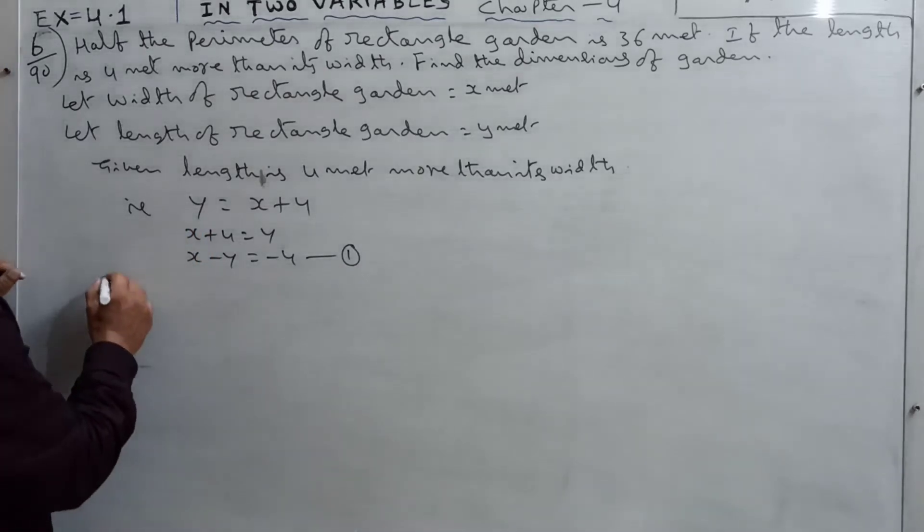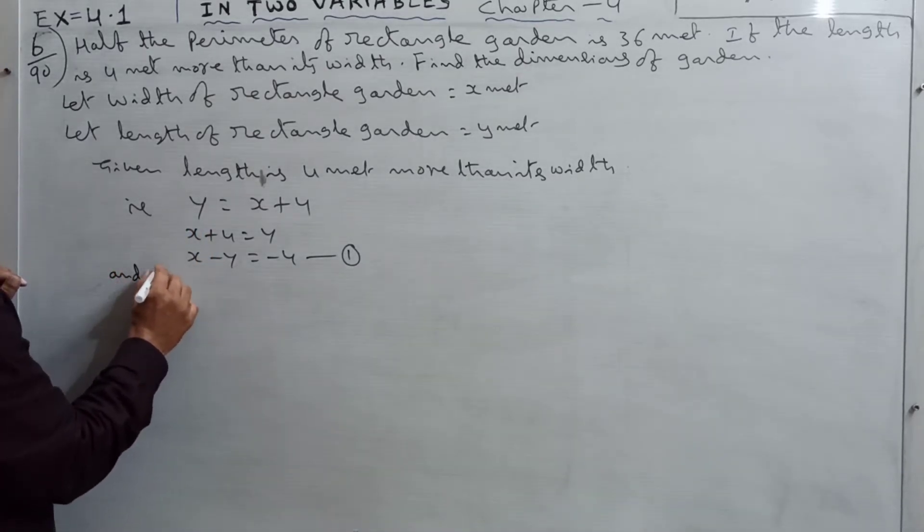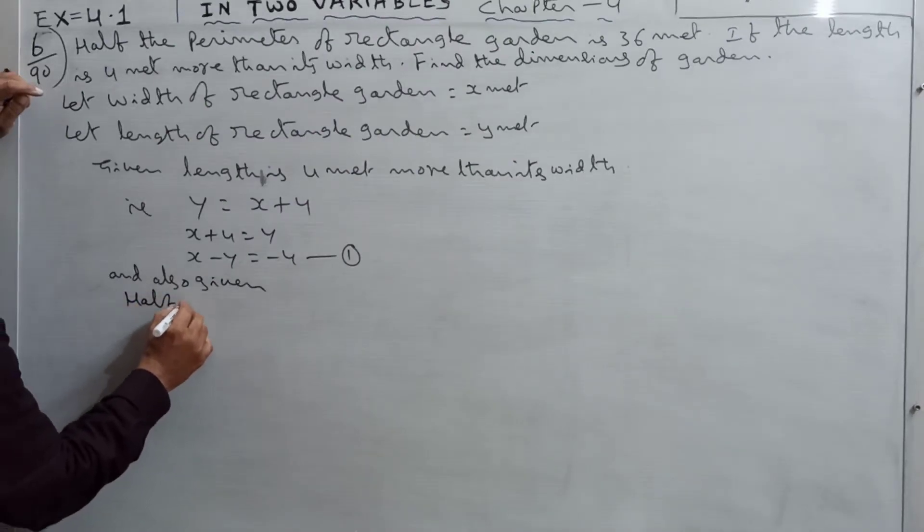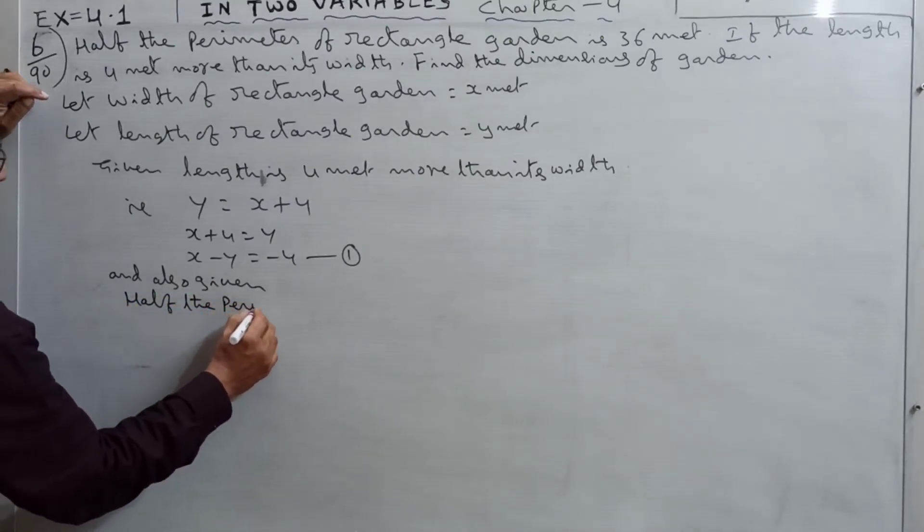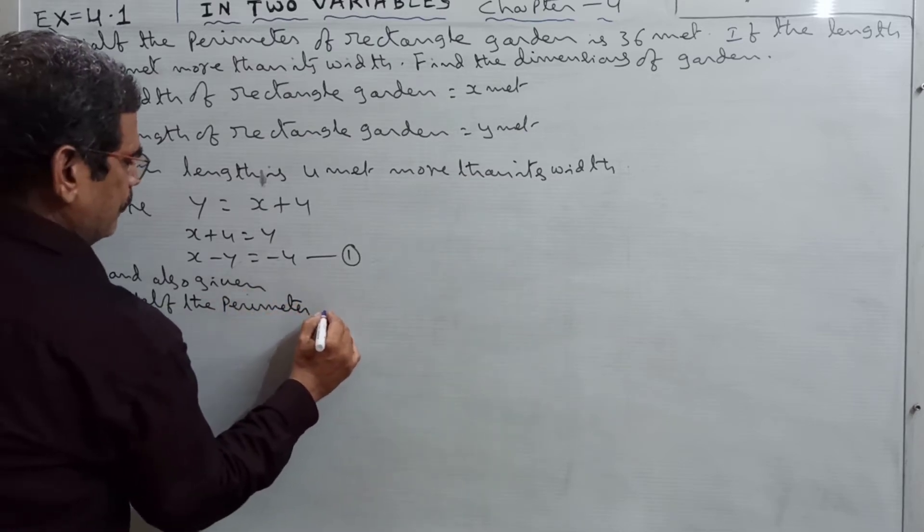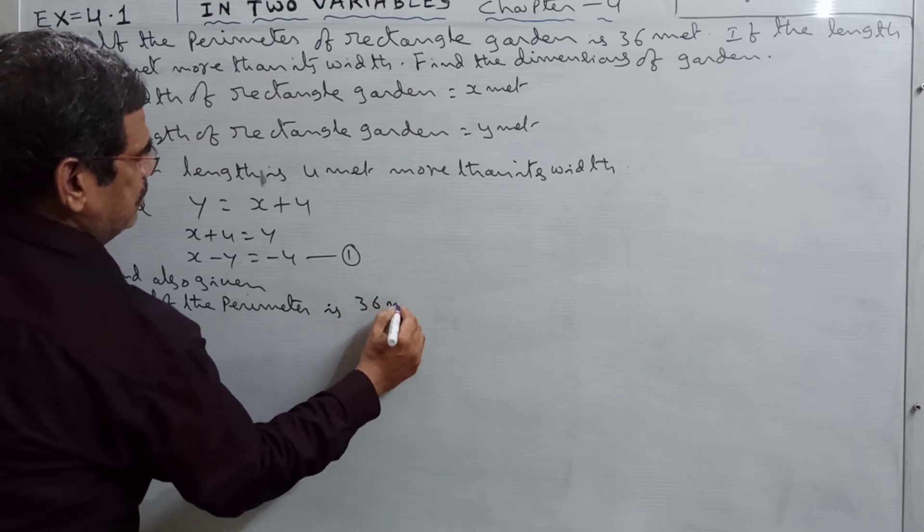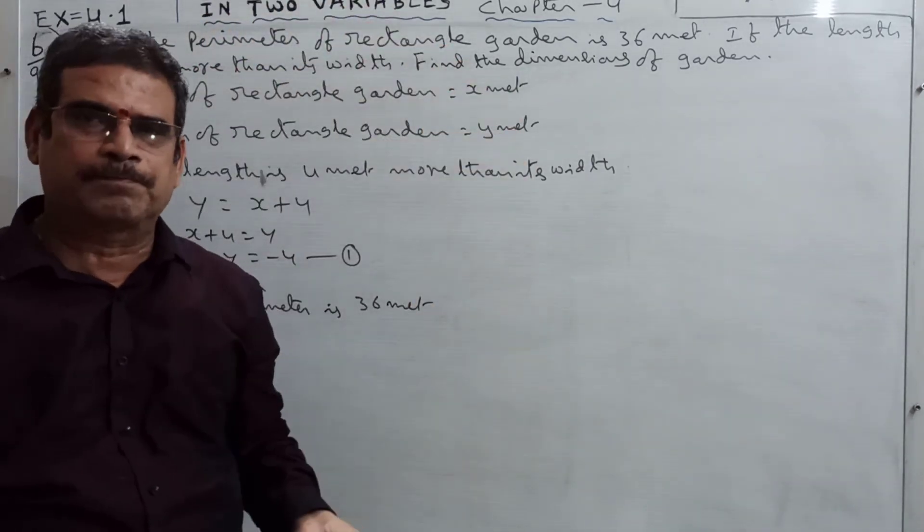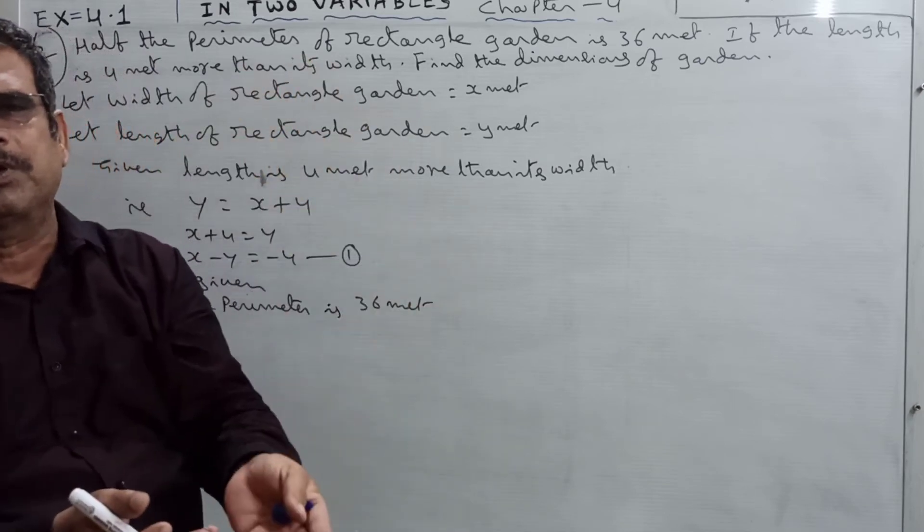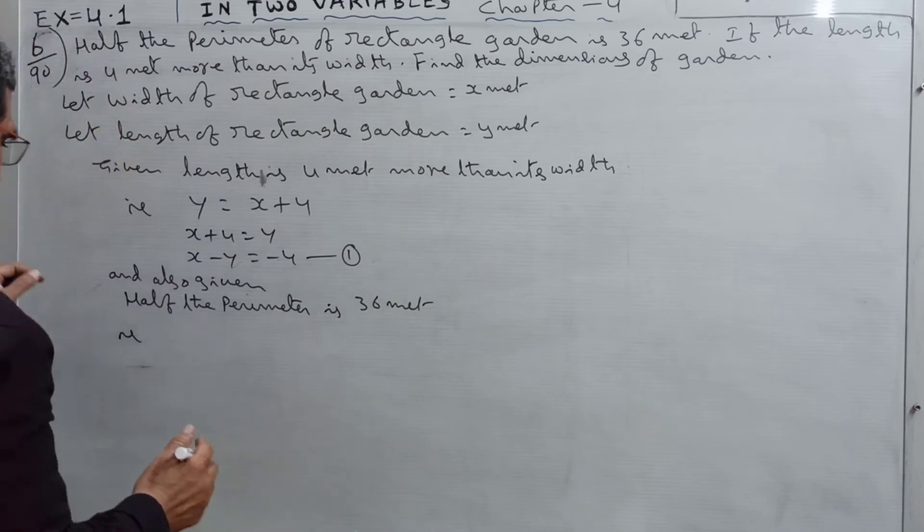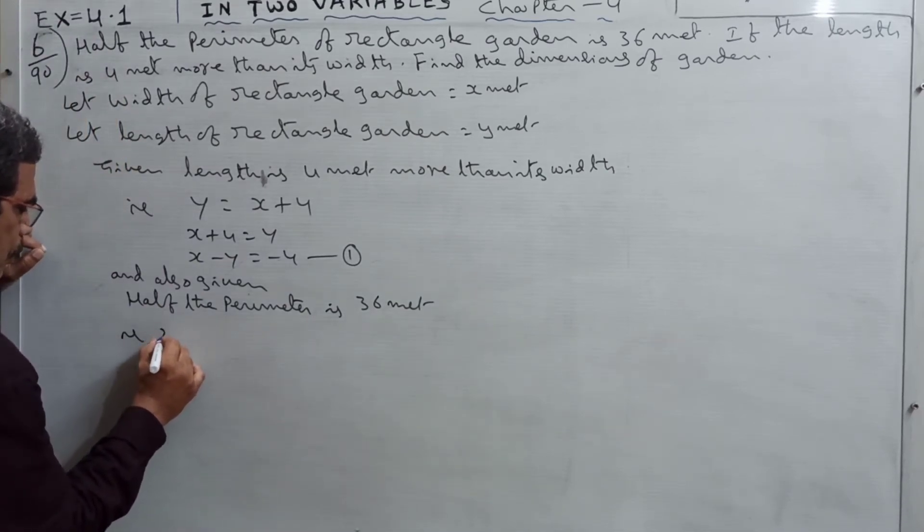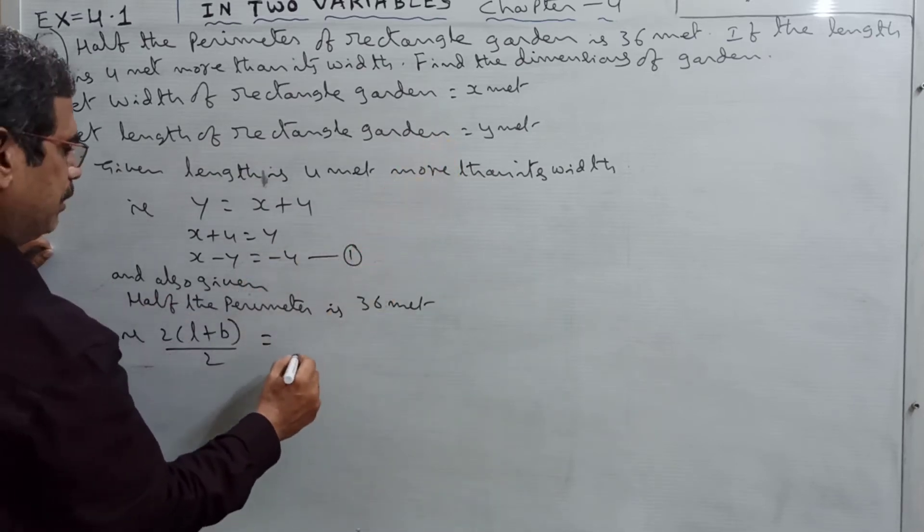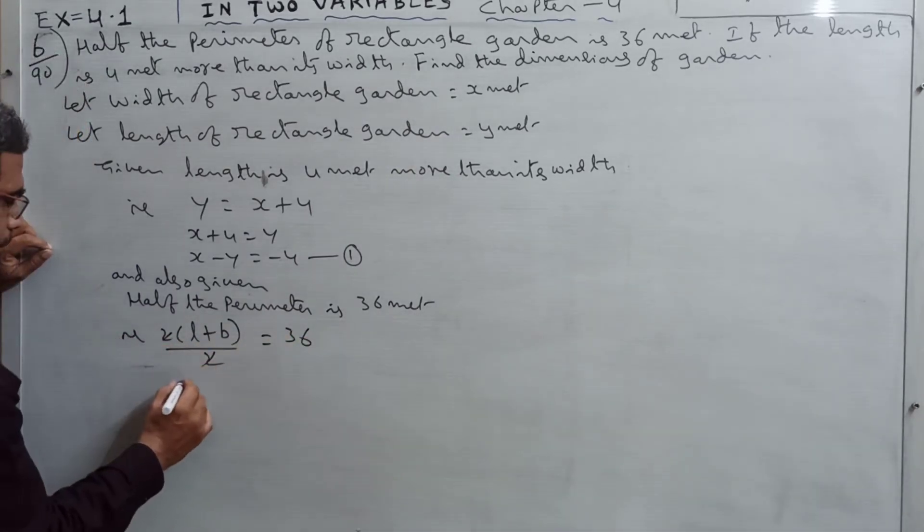Also given, half the perimeter is 36 meters. Perimeter of rectangle formula is 2 times (l plus b). If we put half the perimeter, 2 times (l plus b) divided by 2, that is equal to 36. The 2 will get cancelled.